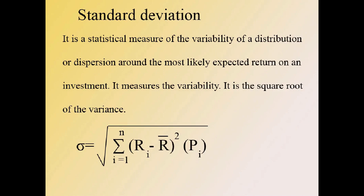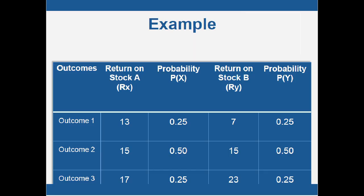Next is standard deviation. Standard deviation is a statistical measure of variability of a distribution around its mean — it is the square root of the variance. The equation for calculating standard deviation is: σ = √[Σ(i=1 to n) (ri − R̄)² × pi].